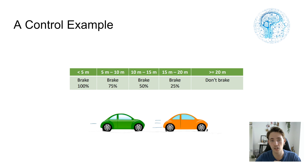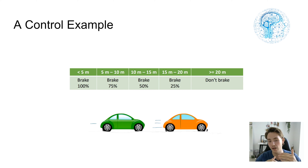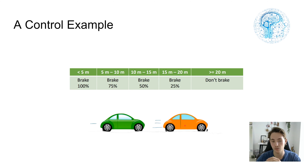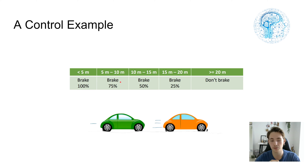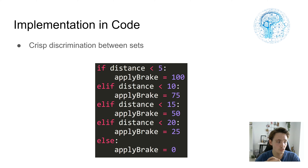Moving to this video, we're talking about fuzzy logic and control. Let's start with a control example where we have a car driving and measuring the distance to the car in front of it. If it gets closer, it slows down or hits the brake. For example, if the green car is under five meters from the orange car, it brakes 100%. Between five and ten meters, it brakes 75%, and we keep doing the same in smaller steps until we're more than 20 meters away, where we don't brake at all.